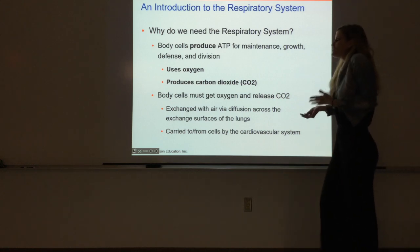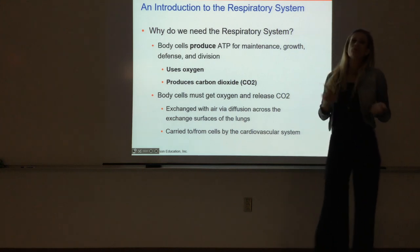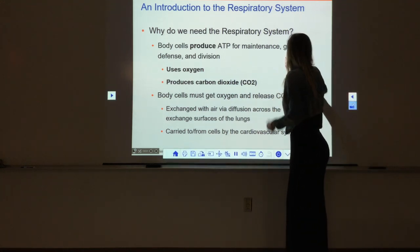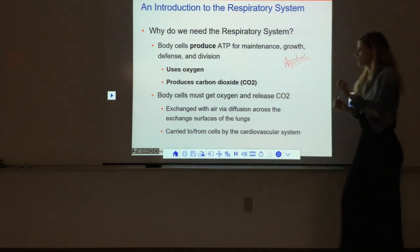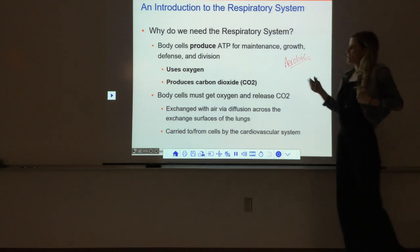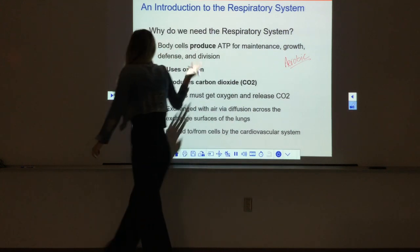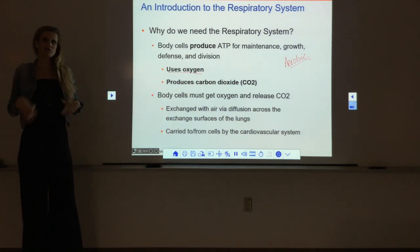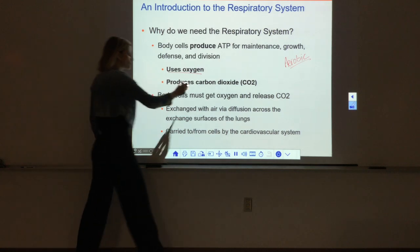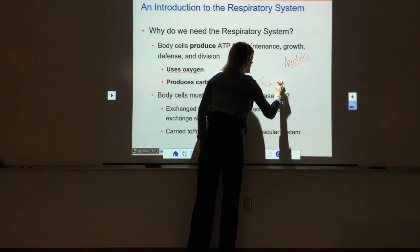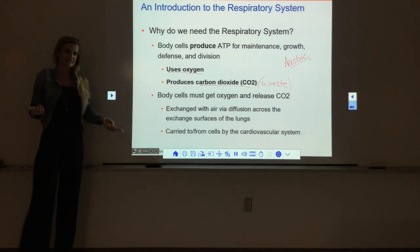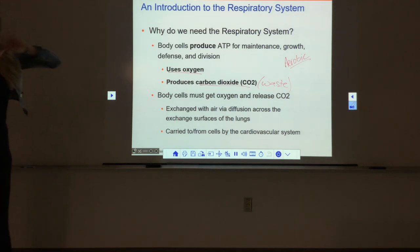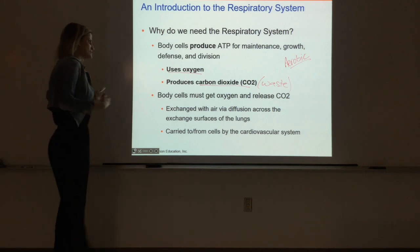Anything that requires fuel is probably going to use ATP. We can make ATP a couple different ways, but the most productive way is aerobically - aerobic respiration. Aerobic means it uses oxygen, so the most efficient way to make energy requires oxygen. In that whole process we produce carbon dioxide as a waste, which we need to get out of our bodies. This is really the main function of the respiratory system - to get oxygen in and push CO2 out - and the reason we do that is for ATP production.